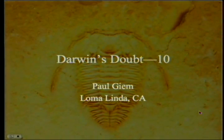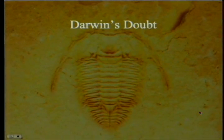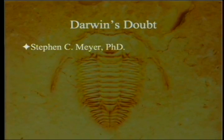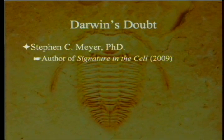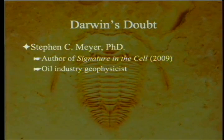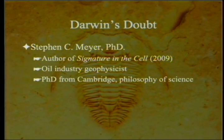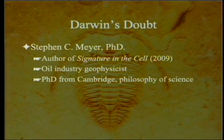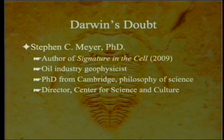Darwin's Doubt, Part 10. We've been reviewing the book Darwin's Doubt by Stephen C. Meyer, Ph.D., author of Signature in the Cell. He was originally an oil industry geophysicist, then got his Ph.D. from Cambridge in the philosophy of science. He is currently the director for the Center for Science and Culture in the Discovery Institute.